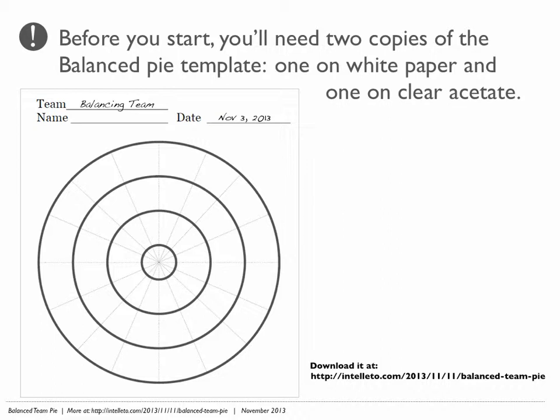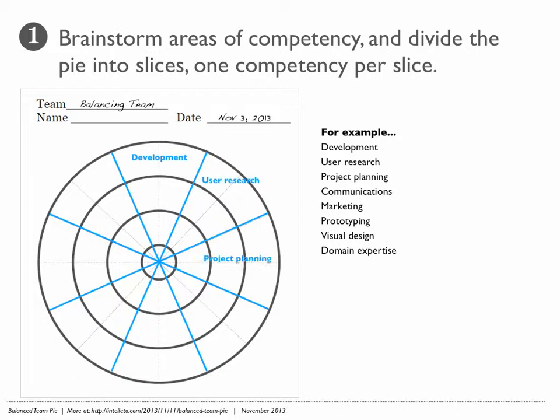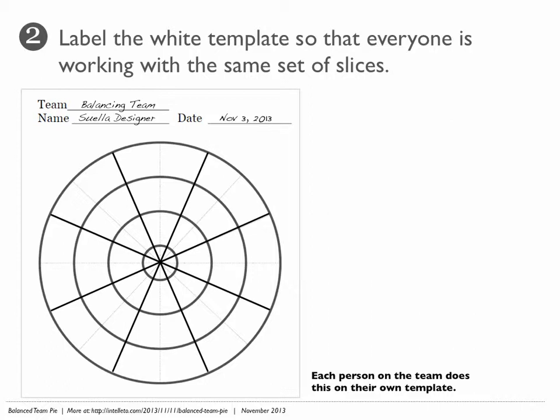First, brainstorm areas of competency and divide the pie into slices, one competency per slice. You'll do this as a team. Next, label the white template so that everyone is working with the same set of slices. Each person on the team does this on their own template.